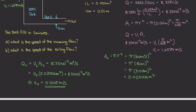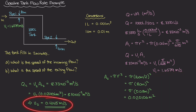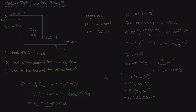The velocity exiting the system is about 0.4145 meters per second, and the velocity entering is about 1.6579 meters per second. This confirms that where the area is smaller (pipe one), the velocity is larger, and where the area is larger (pipe two), the velocity is smaller.